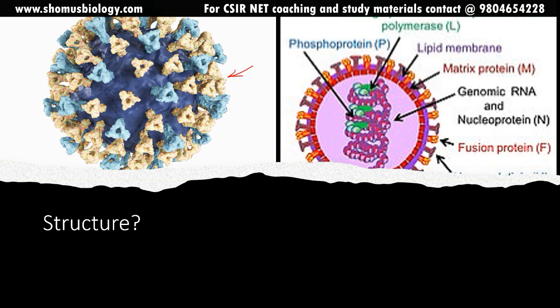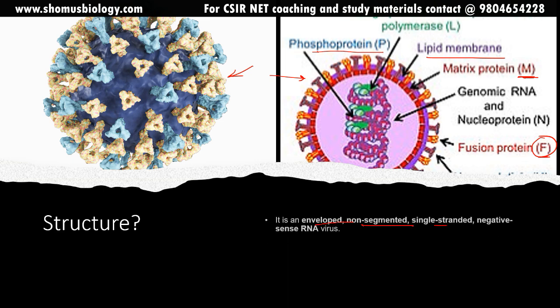Looking at the structure: on the left-hand side we have the 3D structure, and on the right-hand side the schematic cross-section. In the center there is genomic RNA and nuclear protein. Surrounding it are matrix proteins (M), fusion proteins at the periphery (F), and a lipid membrane surrounding the matrix protein and nucleocapsid. Phosphoprotein is also present along with the RNA inside the capsid. Fusion protein F helps fuse with the target receptor, and matrix protein M builds the tegument structure. It is an enveloped, non-segmented, single-stranded negative-sense RNA virus with a diameter of 100 to 250 nanometers.